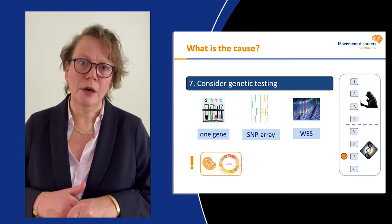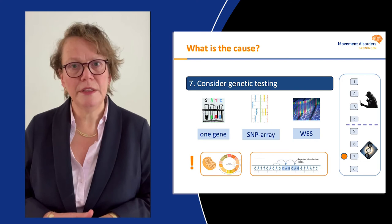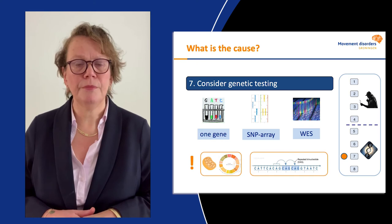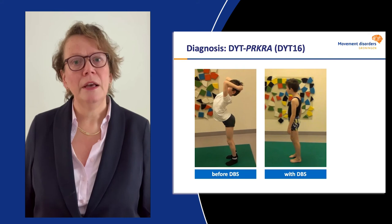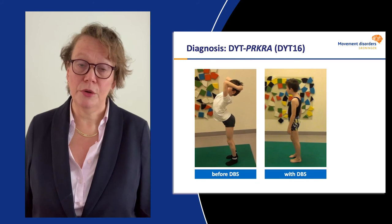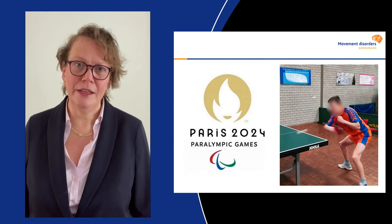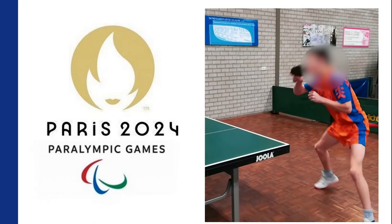When you do whole exome sequencing, you have to think about two things: you are not screening the mitochondrial DNA, and you are not looking for repeat disorders — so if you want to test for those, you have to request separate tests. In our patient, we did whole exome sequencing and found a DIT16 mutation, which is also important for treatment. We treated him with deep brain stimulation with a very good effect, and you can see in the next slide that he is now heading for the Paralympics in 2024 and still has his DBS.